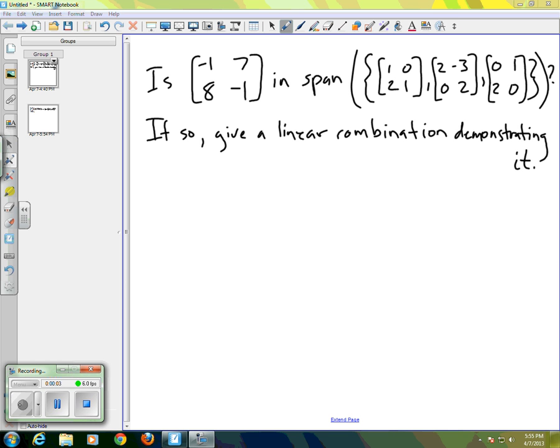In this video, we'll take a look at the concept of span in the setting of some abstract vector spaces. For this first exercise, we're working in the space M22, which is the set of 2x2 matrices with real entries. So when we ask whether the first matrix is in the span of the set of those other three,